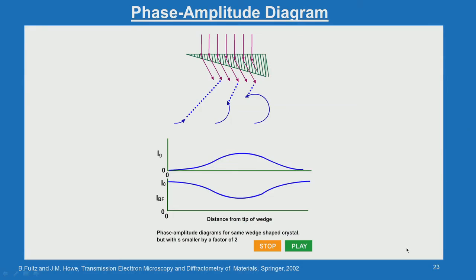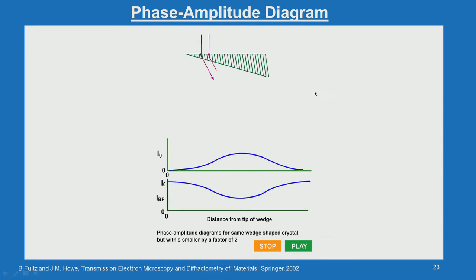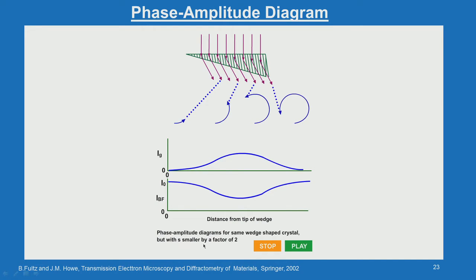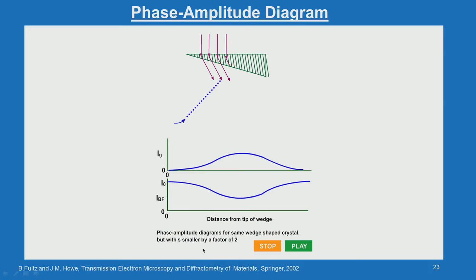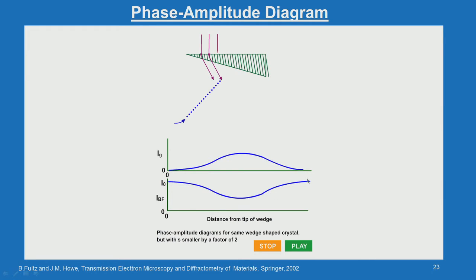What we were discussing in the last class is we were looking at the contrast which arises from the wedge type crystal using the phase amplitude diagram. What we are seeing now with a smaller s is that you are getting the amplitude phase diagram circle becoming bigger, and you see that the diffracted intensity oscillates like this, while this is the transmitted intensity. The fringe pattern — the distance between the dark and bright oscillations — also increases.